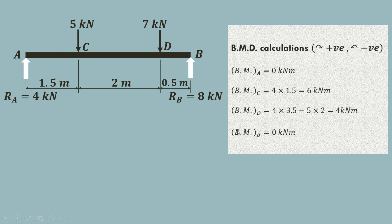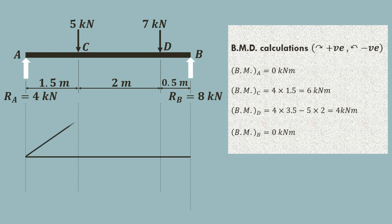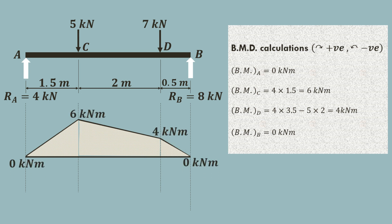Bending moment at B is 0 kNm, as at end points of a simply supported beam the value is always 0. Drawing the bending moment diagram: bending moment at A is 0, rises to 6 kNm at C, decreases to 4 kNm at D, then reduces to 0 at end point B. In this way we draw the bending moment diagram for a simply supported beam carrying point loads of 5 kN and 7 kN at distances of 1.5 m and 3.5 m from the left hand support respectively.